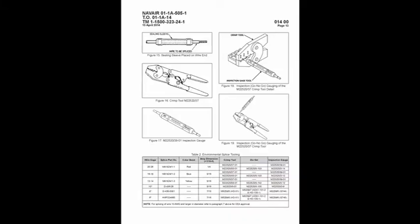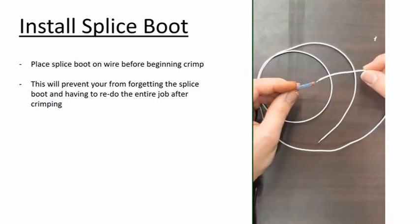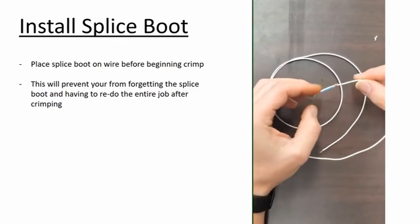Next, we will be crimping on the splice barrel. Ensure to place the splice boot on the wire prior to crimping.